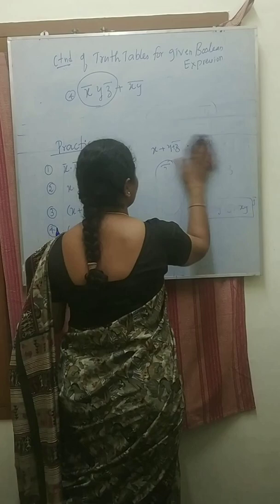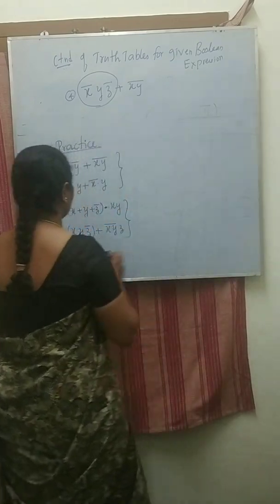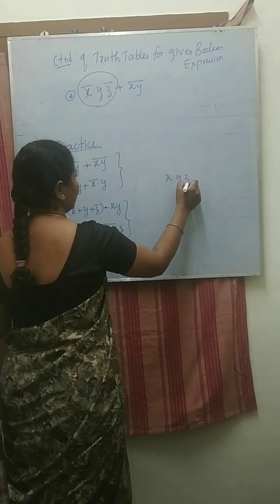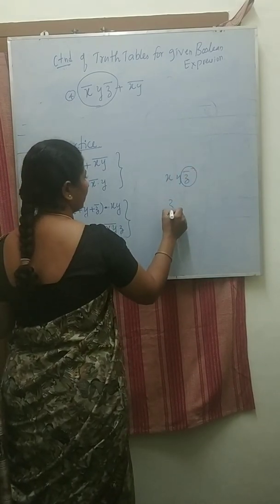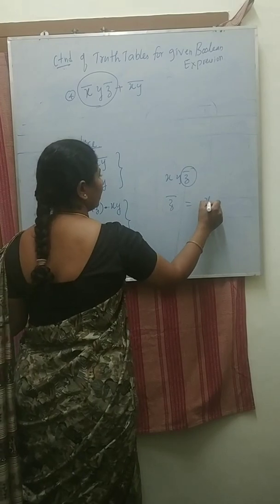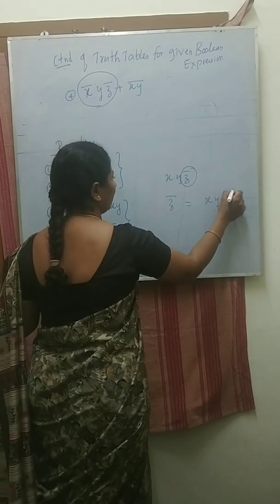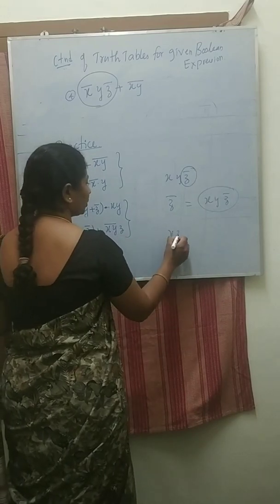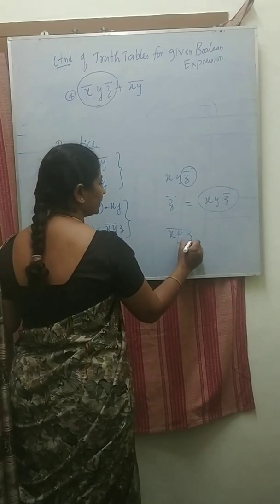Then how to solve the fourth one? Fourth one: the XYZ bar. First find the Z bar. Then XYZ bar. Then here XY whole bar, Z bar Z is there.